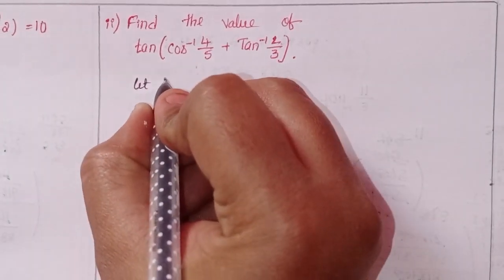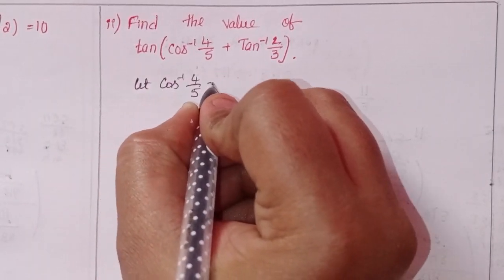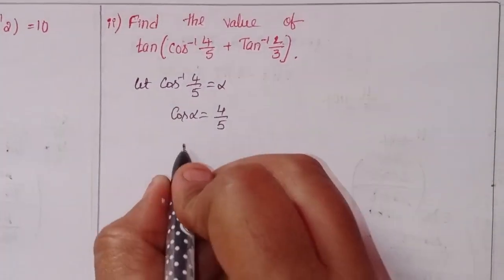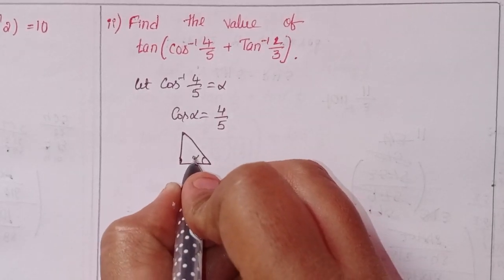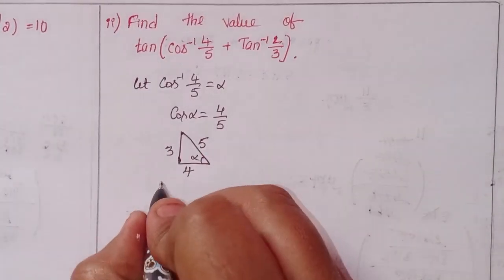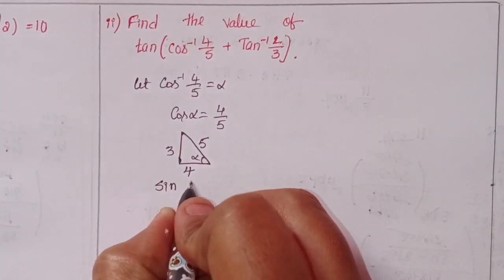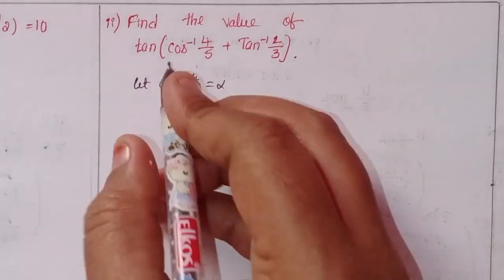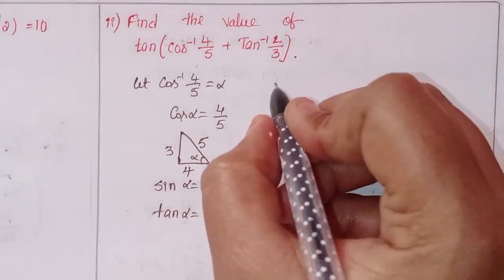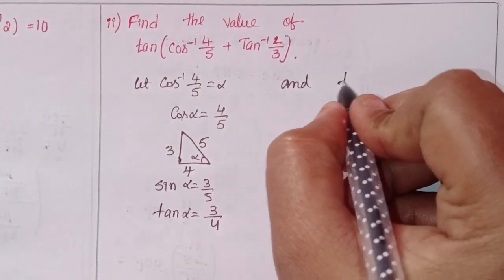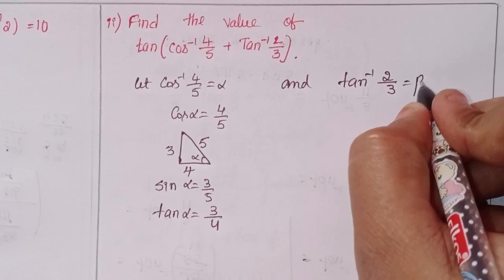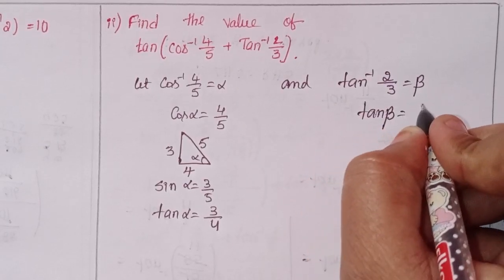Next, second problem: let cos⁻¹(4/5) = α, so cos α = 4/5. Drawing a right angle triangle with α, the adjacent side over hypotenuse gives cos. The opposite side is automatically 3, so sin α = 3/5, and tan α = 3/4.